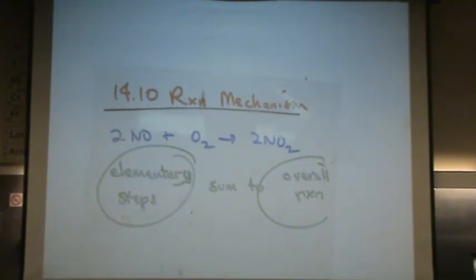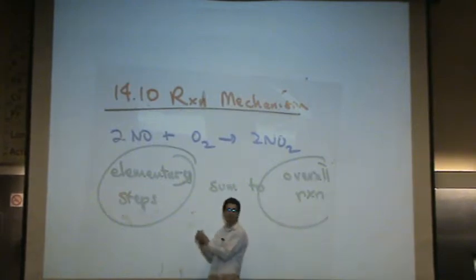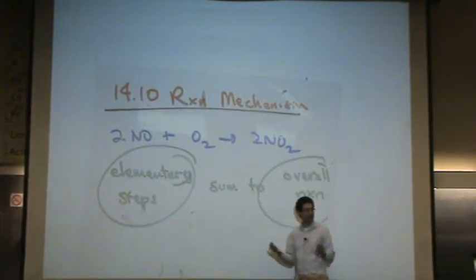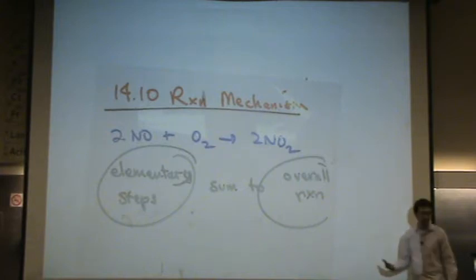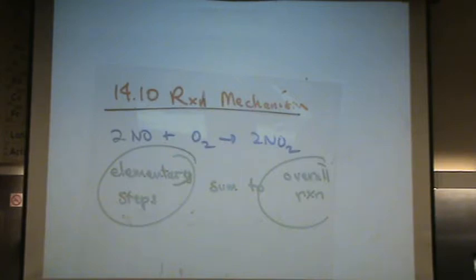Elementary steps have a couple characteristics I want to let you know about. One is these are uni or bimolecular. What that means is one molecule either decomposes or two molecules can hit, which is very probable mathematically and would happen chemically. Three or more molecules hitting with the right collision and energy is nearly impossible. There's intermediates in the elementary steps that need to cancel. That's very common.